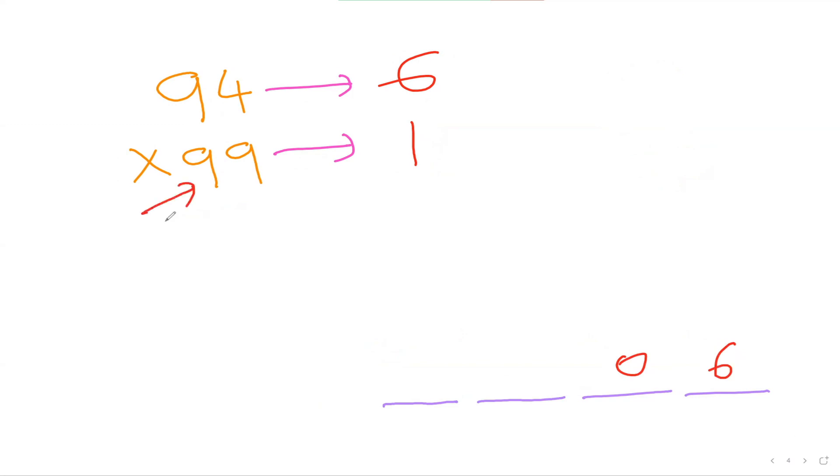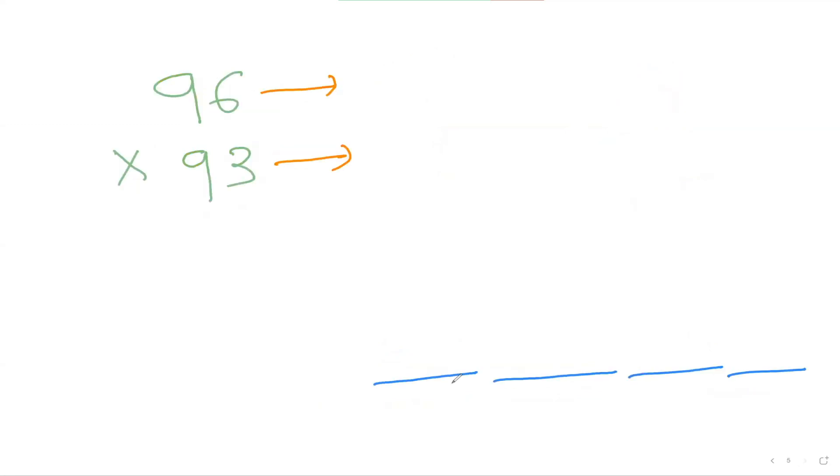Now 99, difference from 100 is just 1, so I'm going to do 94 minus 1, which is 93. So 9306 is my answer. I believe now you become the master guys. 96 times 93, can you please do that guys?